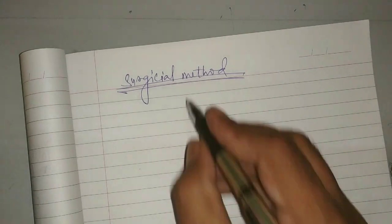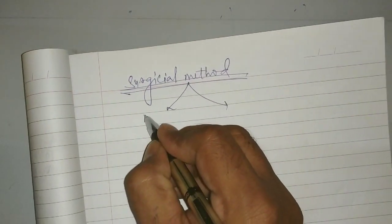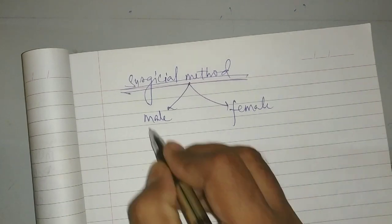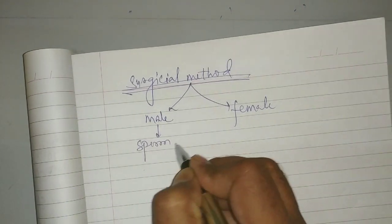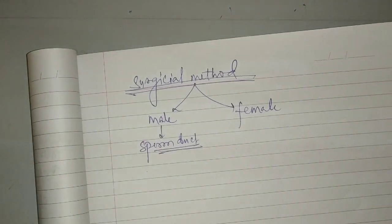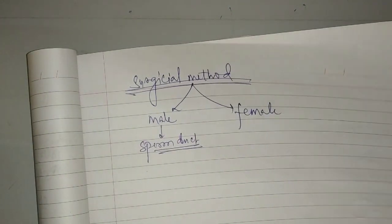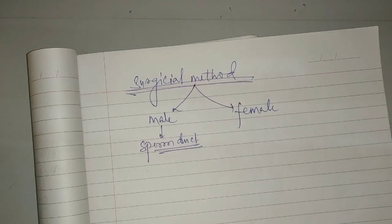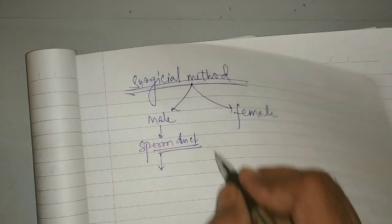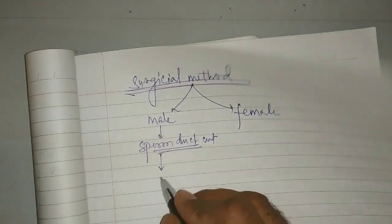In males and females both. In males, one is the sperm duct. If they can cut the sperm duct and tie it at the end, does sperm come out? No. When they are not coming out, there is no chance of fertilization. The process of cutting the sperm duct we call...